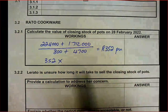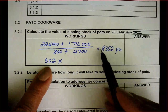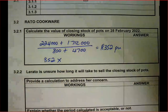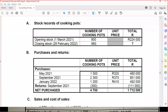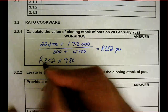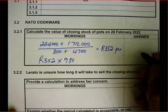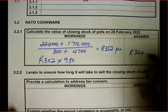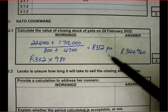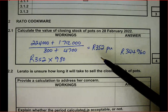Sometimes people stop at the weighted average unit cost, but you must continue. I times 352 rand by the closing stock of 980 units. That gives me the closing stock value of pots: 344,960 rand. They asked you to calculate weighted average in Paper 1 too — but please also look at FIFO and specific identification more specifically.